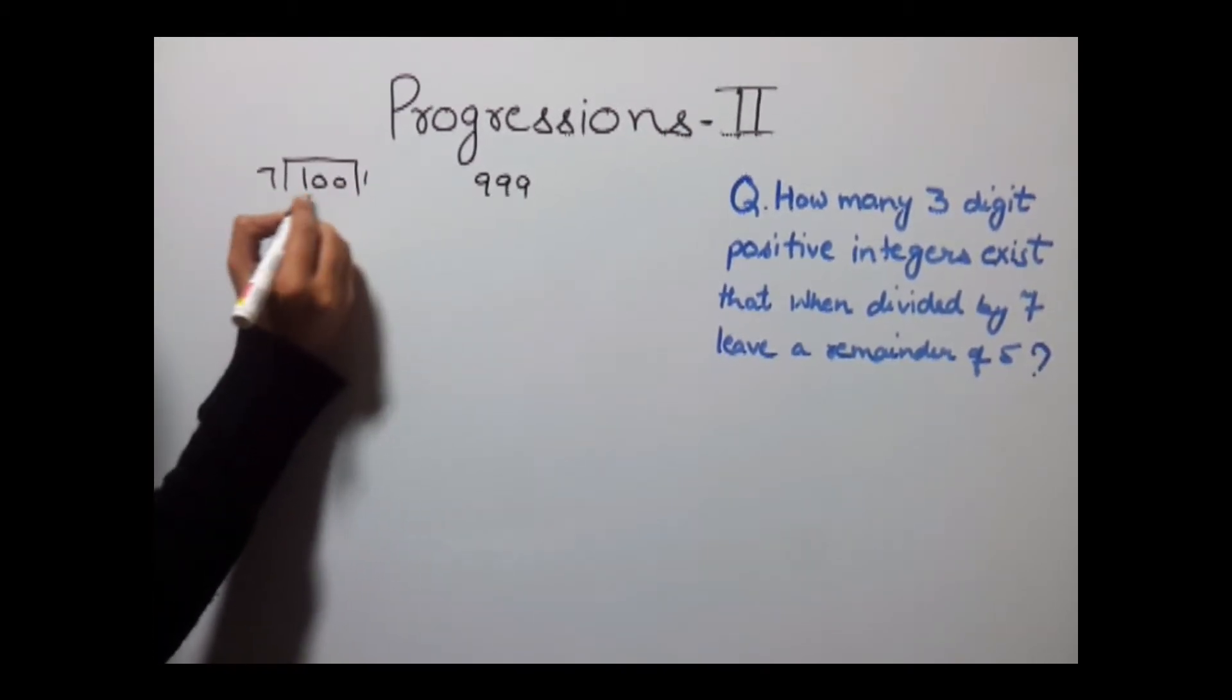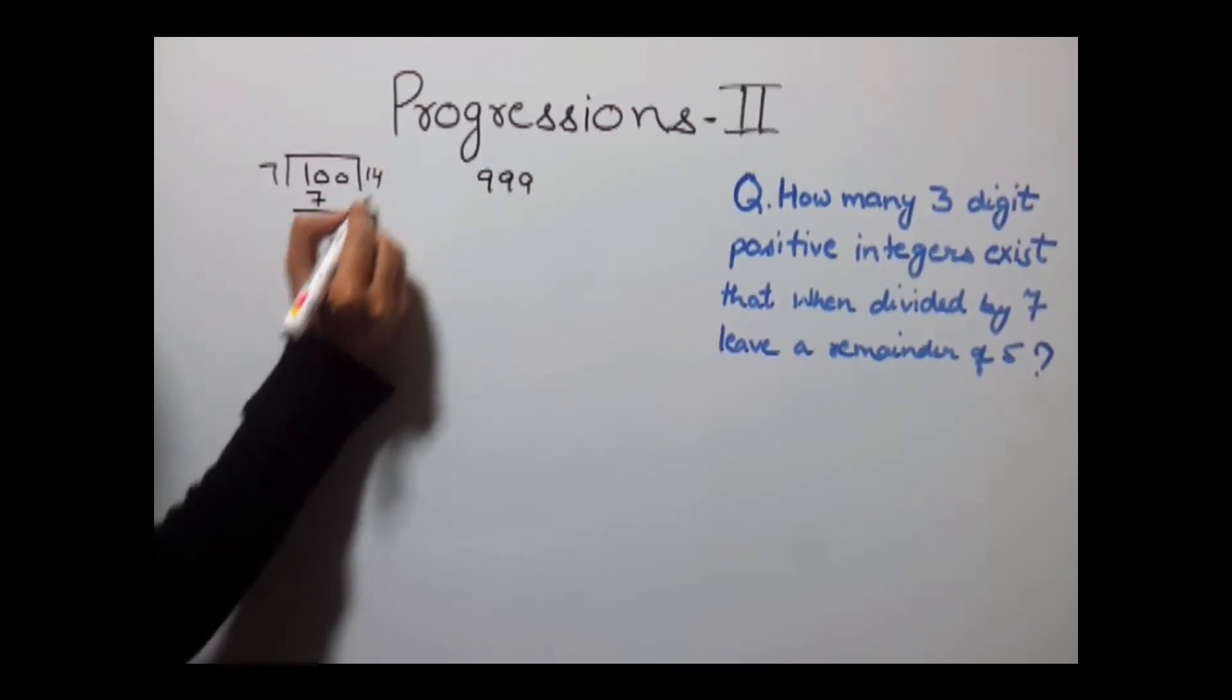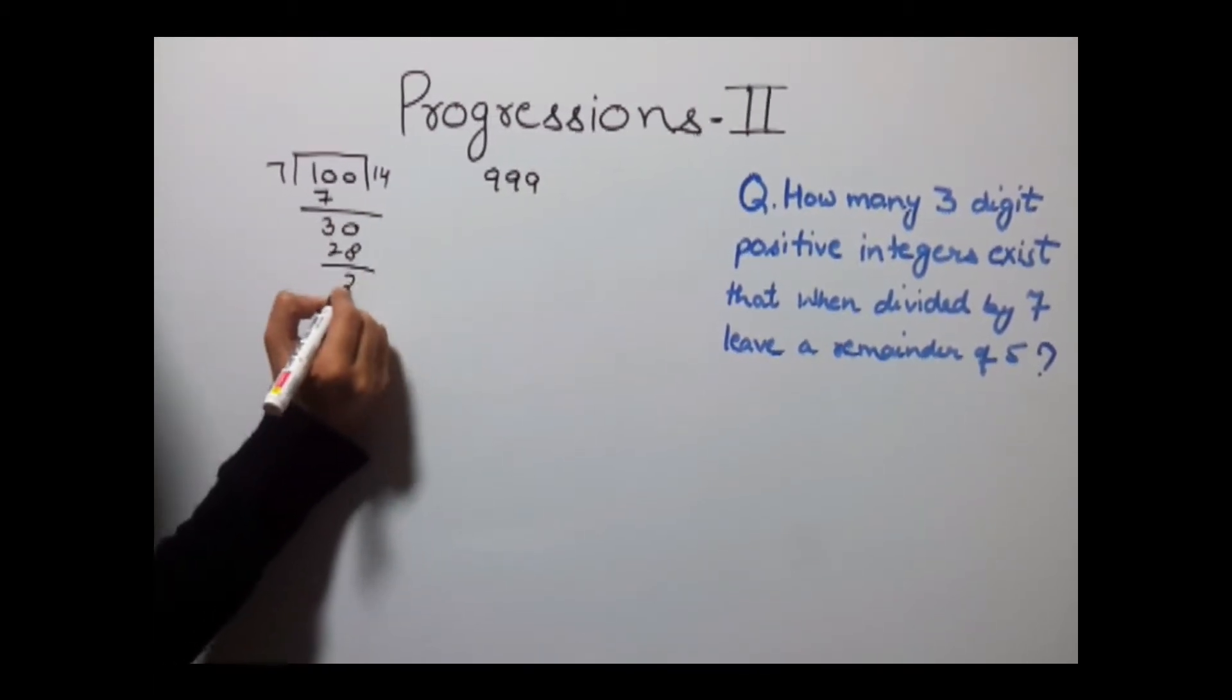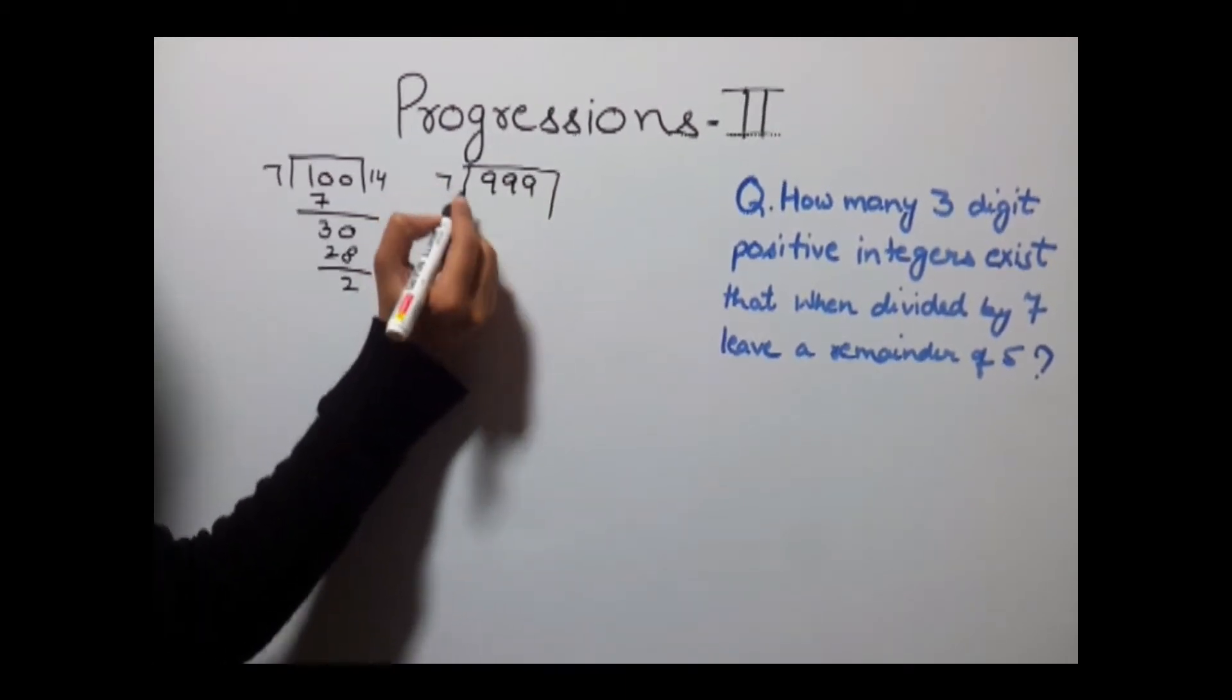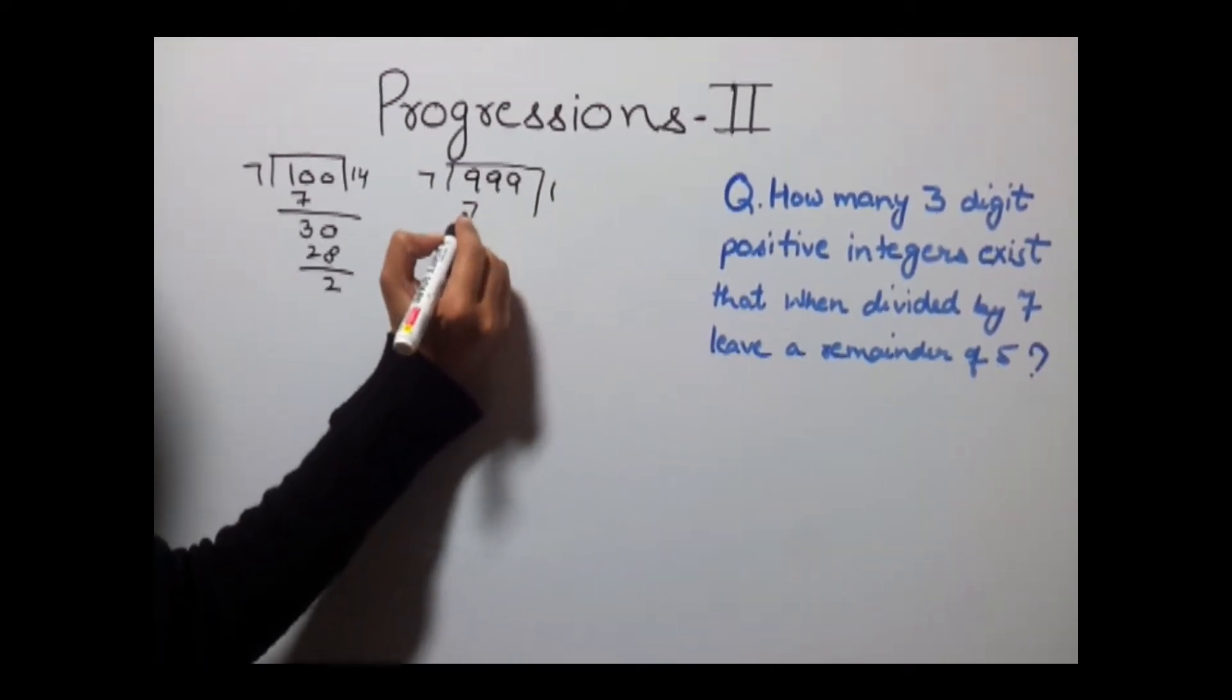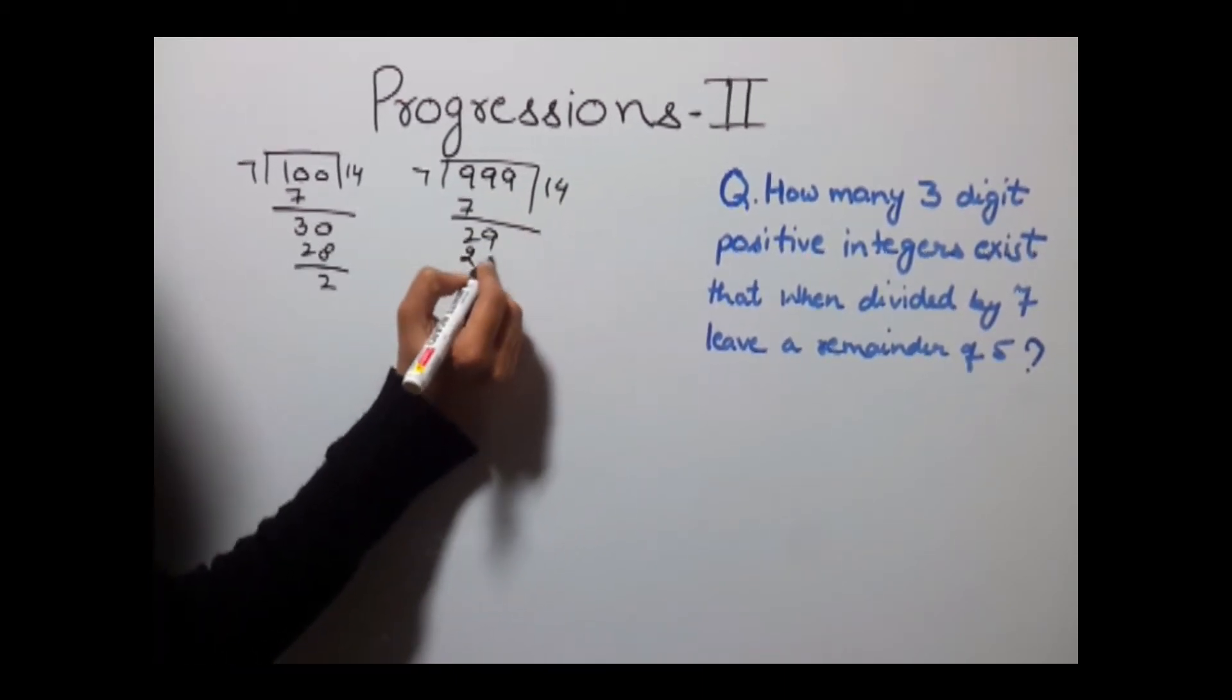So we'll get 7×1 = 7, 30, 7×4 = 28, with 2 as remainder. Similarly we'll divide 999 by 7: 7×1 = 7, 29, 7×4 = 28.